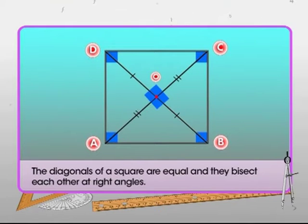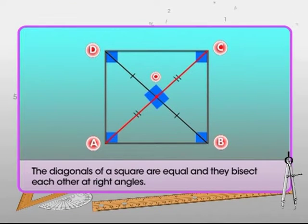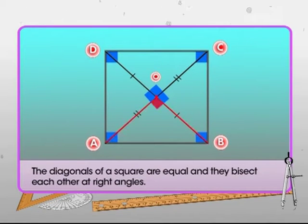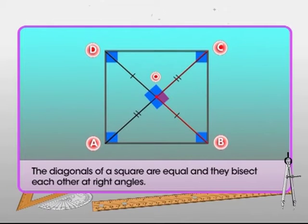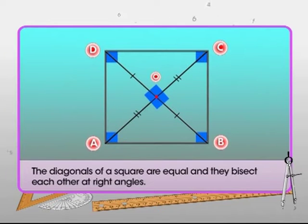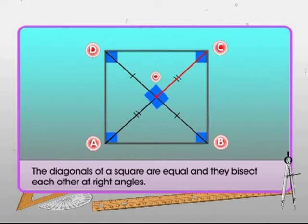In the diagram, diagonal AC equals diagonal BD, and angles AOB, COD, BOC, and AOD are each equal to 90 degrees. Thus AO equals OC and DO equals OB.